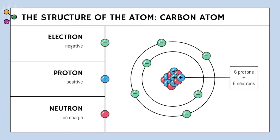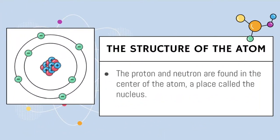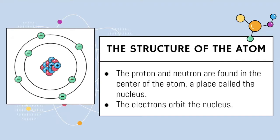The structure of the atom contains subatomic particles. This is an example of the carbon atom. It has electrons which are negative, protons which are positive, and neutrons which have no charge. The structure of the atom — let's talk about it in more detail. The proton and neutron are found in the center of the atom, a place called the nucleus. The electrons orbit the nucleus. Do you see in the picture on the left? You have the blue protons with a positive sign inside, the red neutrons which are in the nucleus of the atom, and then the electrons are in shells surrounding the nucleus — they are green with a negative charge.